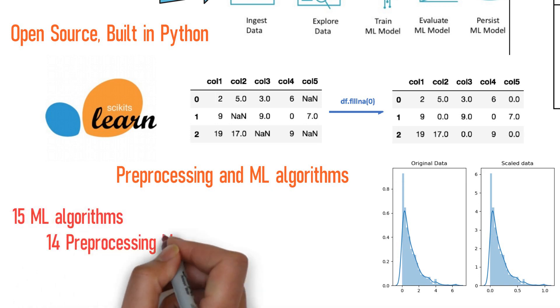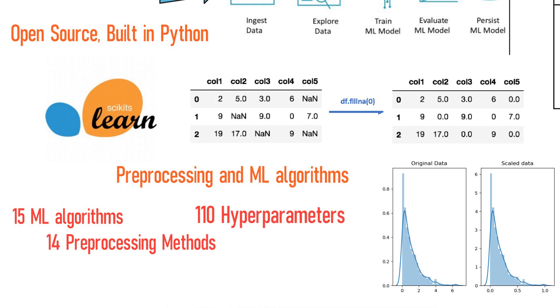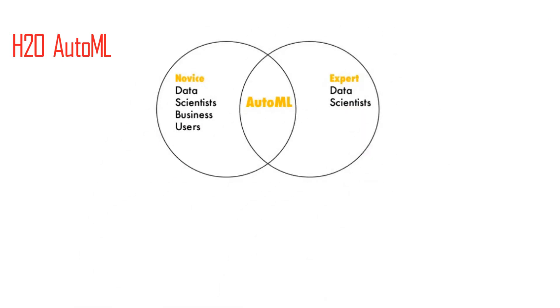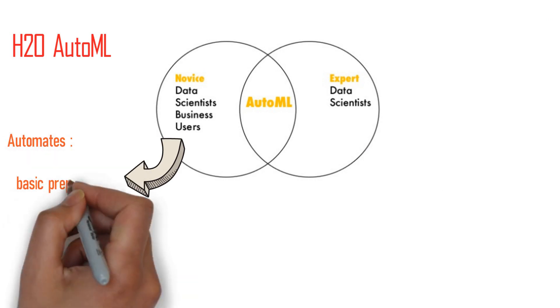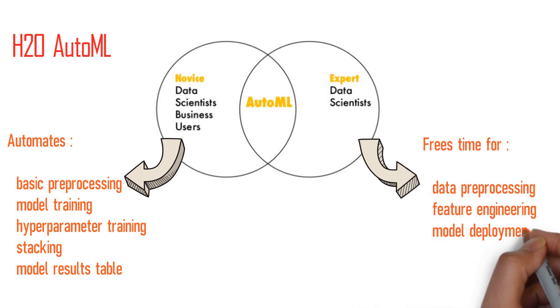H2O AutoML. H2O's AutoML is a helpful tool for users by providing a simple wrapper function that performs a large number of modeling related tasks that would typically require many lines of code and by freeing up their time to focus on other aspects of the data science pipeline tasks.